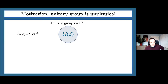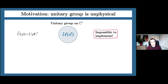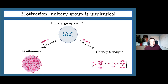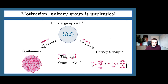Let me start with the motivation. We all know that it's impossible to implement arbitrary unitary transformations on a finite-dimensional quantum system. The reason is that the unitary group forms a continuous set, and we always have to resort to approximations. There are two natural notions of approximations: first are epsilon nets, which are discretizations of unitary channels; second are unitary designs, which are ensembles of unitaries that mimic properties of the Haar measure on the unitary group. This talk is about connecting those two notions, especially in the context of random quantum circuits.